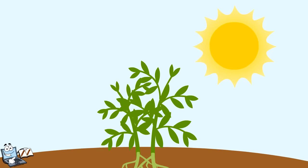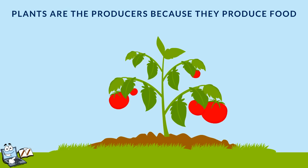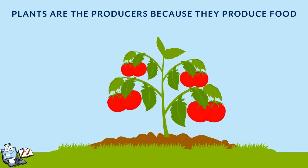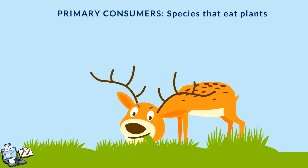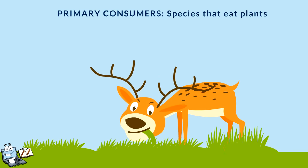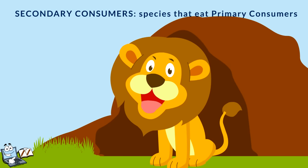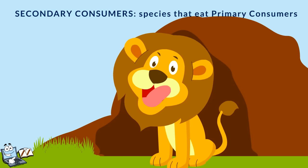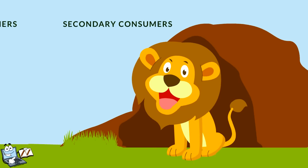This food chain began with plants. Plants are the producers because they produce food. The species that eat plants are known as primary consumers, and the species that eat the species dependent on plants directly are called secondary consumers.